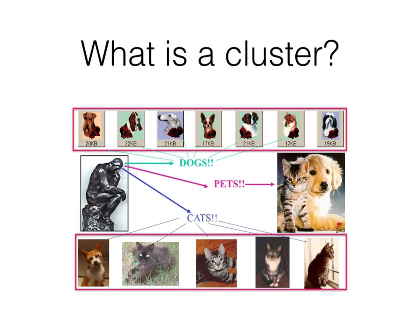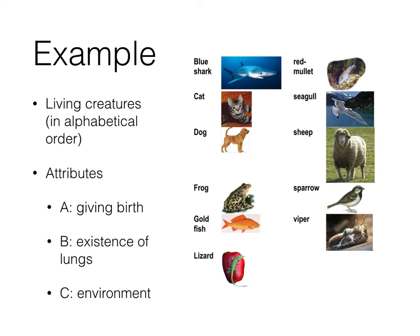Clusters can be different things depending on how we measure similarity. Here we have a whole lot of living creatures listed in alphabetical order: a shark, a cat, dogs, frogs, goldfish, lizards, a red mullet (a fish), seagulls, a sheep, a sparrow, and a viper — a snake. We have several attributes about each of these animals.